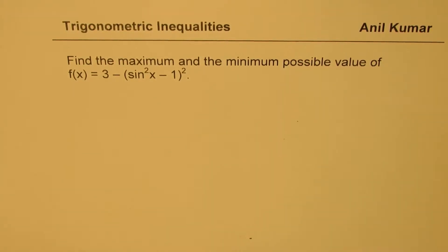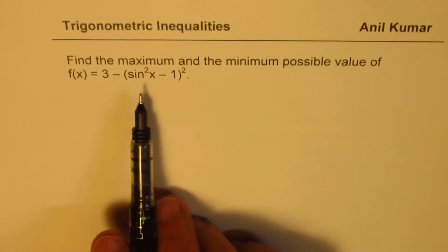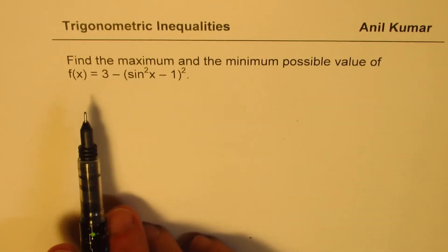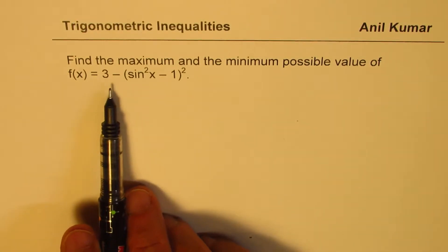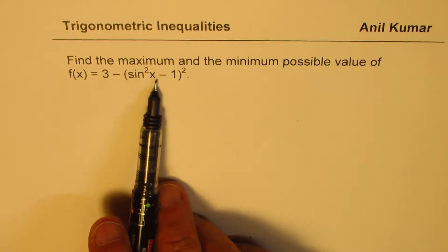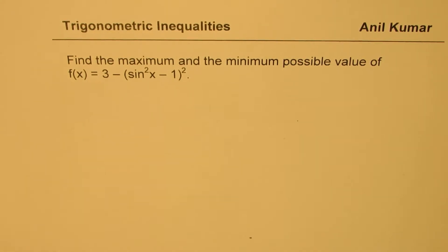I'm Anil Kumar, welcome to my series on trigonometric equations. Let us get ready by working with trigonometric equations and trying to find out how to get their maximum and minimum values. The question here is: find the maximum and the minimum possible value for f(x) equals 3 minus (sin²x - 1)².